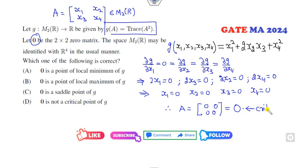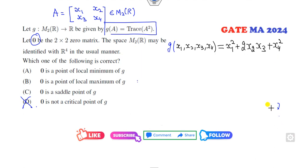And that matrix is denoted by O, so that means this is my critical point. But look at the last option, it said 0 is not the critical point, so that option is cancelled.